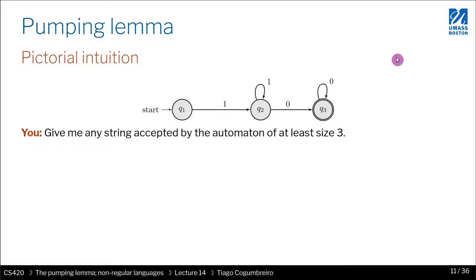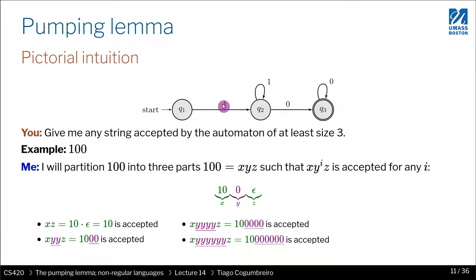If you give me let's say 100, you see already that you already went through that loop once. That means I can partition your string into three parts such that the part in the middle goes through the loop. In this case the first part would be 10, the part in the middle is the part that goes through the loop which is 0, and then on the right hand side could possibly be empty which it is.